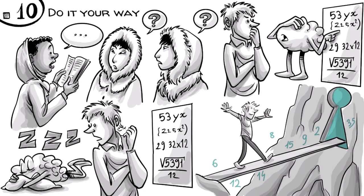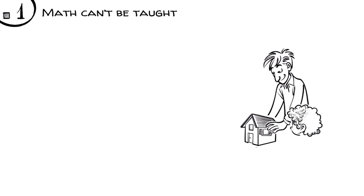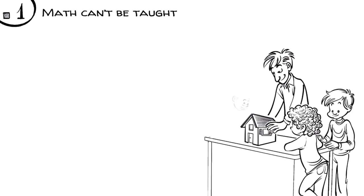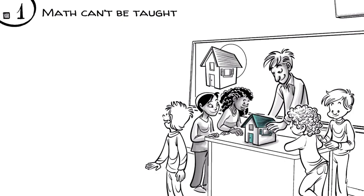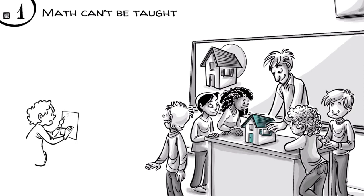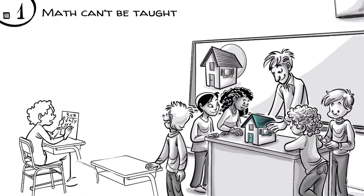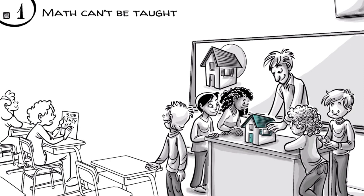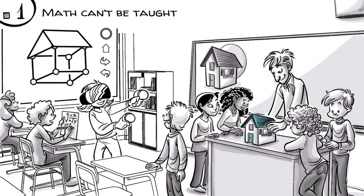Which brings us back to rule one. Math can't be taught. It has to be constructed. If we want to learn math, we have to do math in our heads, ideally with real-life experiences. Later, we replace the objects with abstractions, such as language, symbols, or whatever the future might bring.